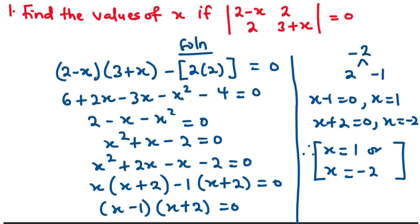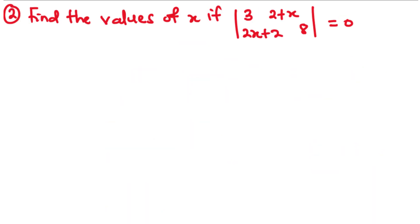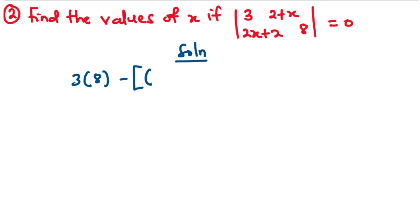Now let's try the second example. For example 2, we are going to find the value of X if the determinant of the matrix [[3, 2 plus X], [2X plus 2, 8]] is equal to 0. We are going to use the same approach. So we multiply 3 by 8 and then subtract the product of 2X plus 2 and 2 plus X. So we have 24 minus (2X plus 2)(2 plus X) equals 0.